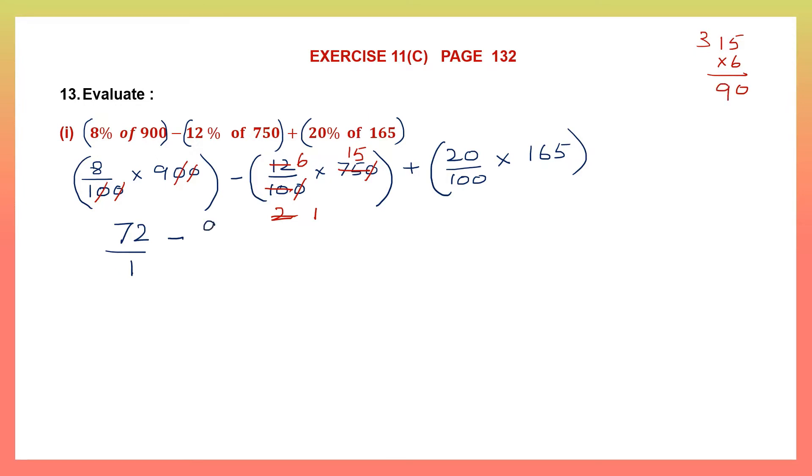Let's go to the next bracket. I can cancel 1, 0 and 1, 0. Now I can cancel 10 and 75 by 5. I can cancel 2 and 6. So now I have 15 into 6. Let's multiply and see. 15 into 6 is 90. Then let's go to the third bracket. I can cancel 2 and 10, then 5 and 165. 5 into 33 will give me 165.